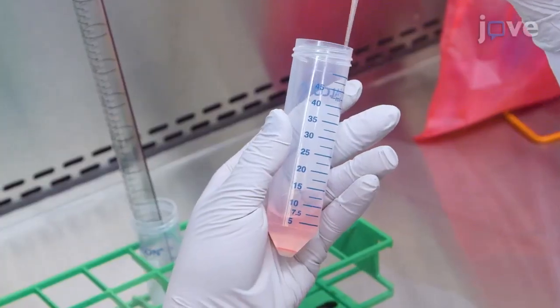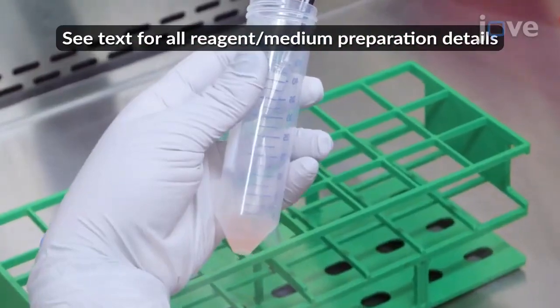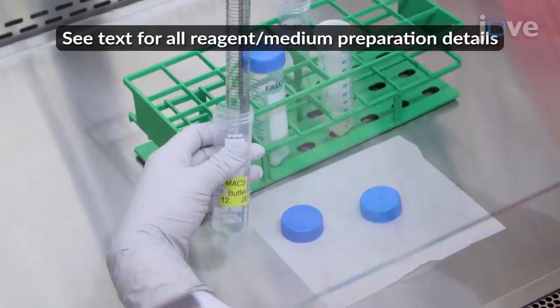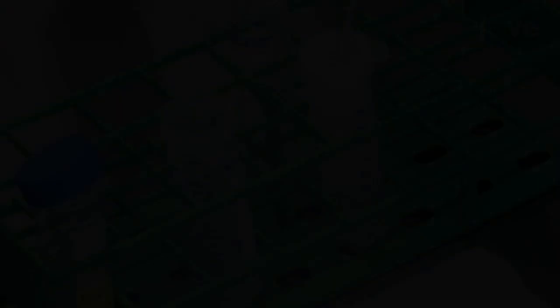Aspirate all of the supernatant and resuspend the cells in 10 milliliters of max buffer before filtering the cell suspension through another 70 micrometer pore cell strainer.